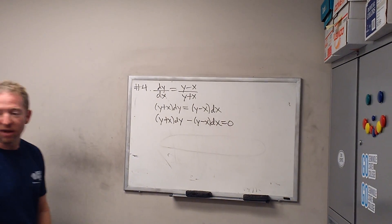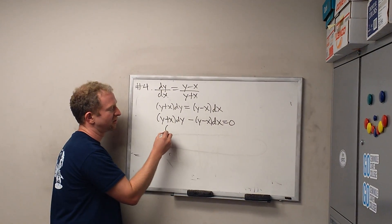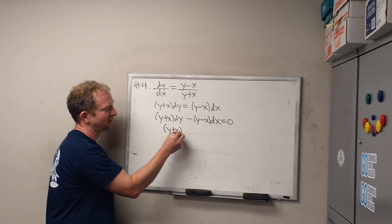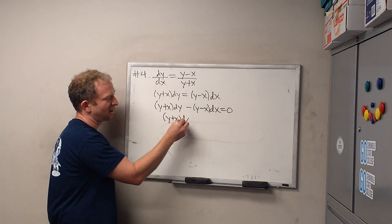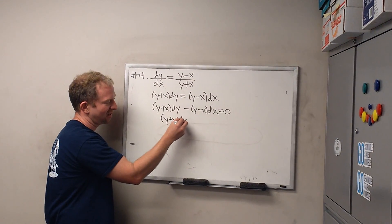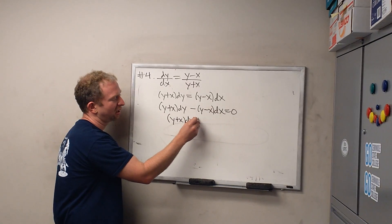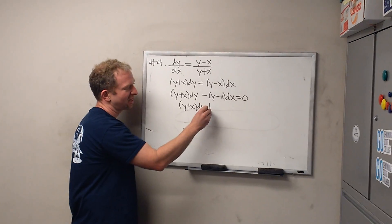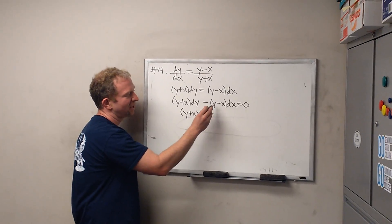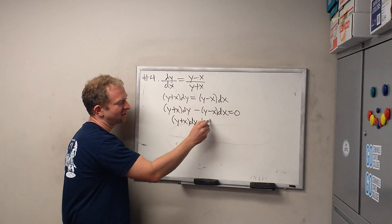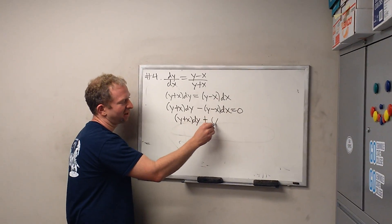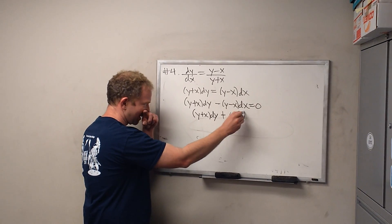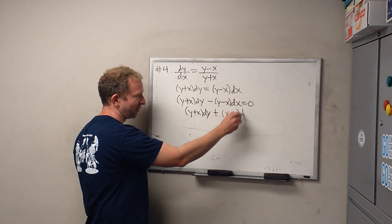And to make it even better, you can distribute the minus. I'll leave it as y plus x dy, and if I distribute the negative, what's going to happen? Positive. And then is that negative y now? That's negative y.